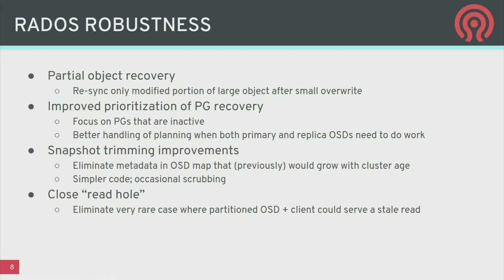We've improved PG recovery prioritization and scheduling. We've fixed snapshot trimming — there was a growing pile of metadata in the OSD map about deleted snapshots accumulating over 10 years, which has been keeping me up at night. That's fixed in Octopus with a much simpler, cleaner approach. There's also a nagging issue called the read hole: a very obscure corner condition where a fenced-off OSD and client could serve a stale read. That's finally getting fixed too.